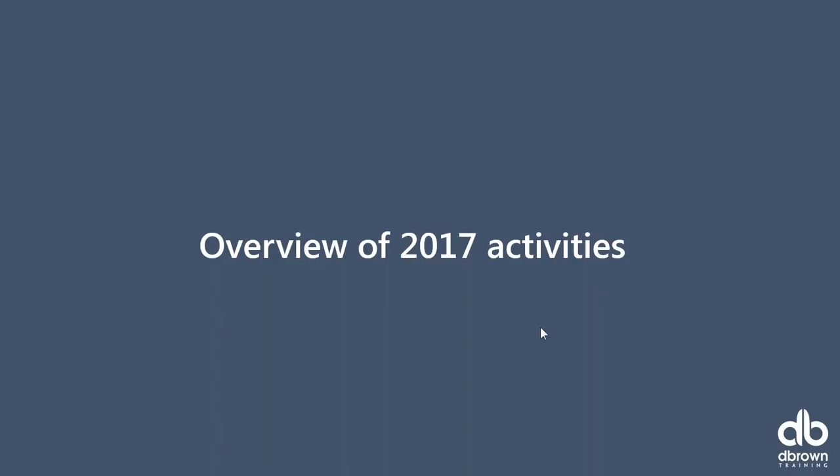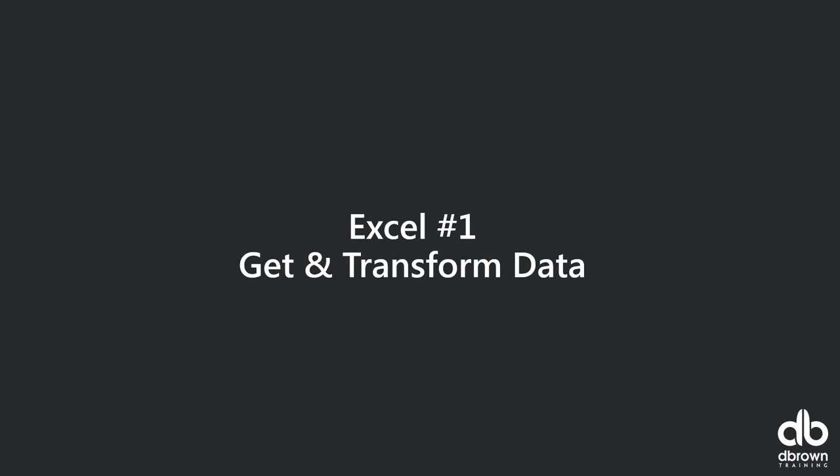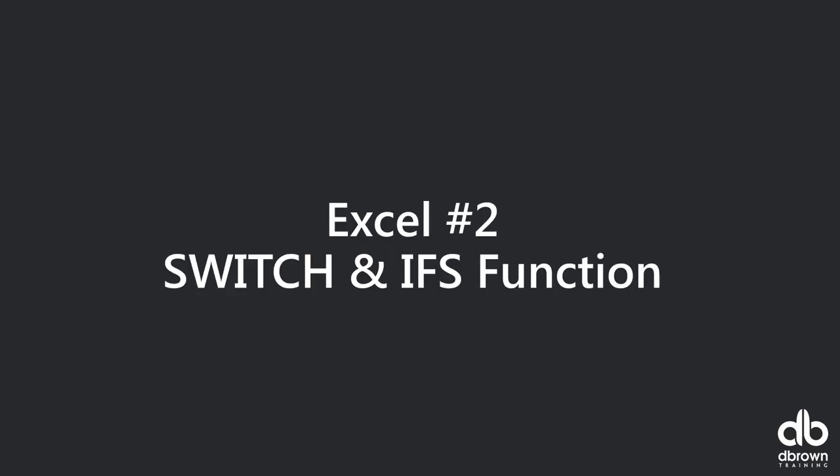Our favorite five Excel features: first, Get and Transform. In Excel 2016 they replaced the Get External Data tab with Get and Transform, which is Power Query — an ETL tool: Extract, Transform, and Load. You can use it to bring in about 70 different data sources into Excel for analytics. Second, two new functions: SWITCH and IFS.